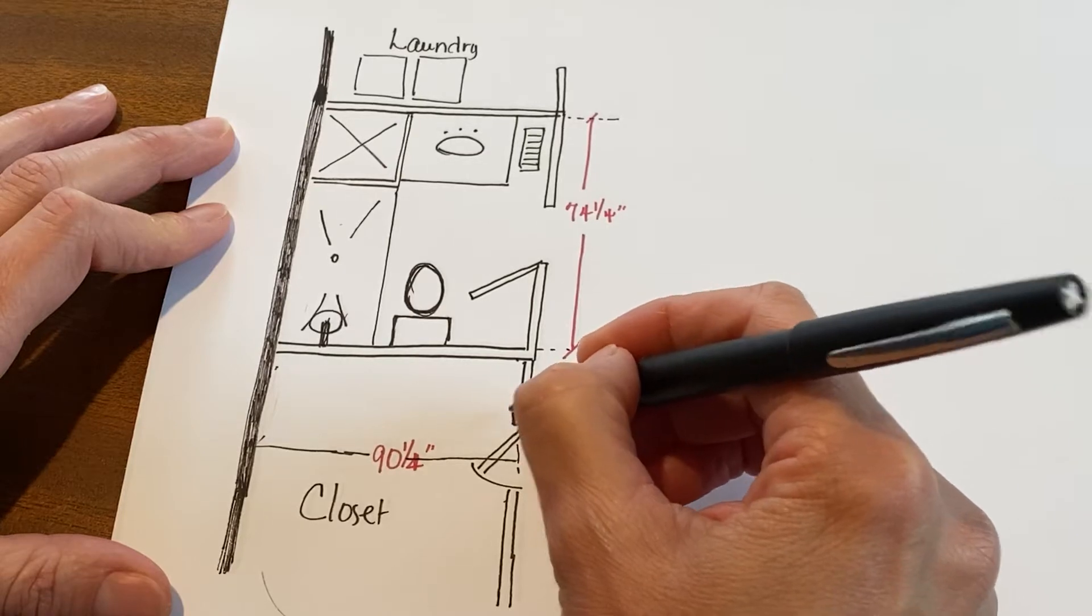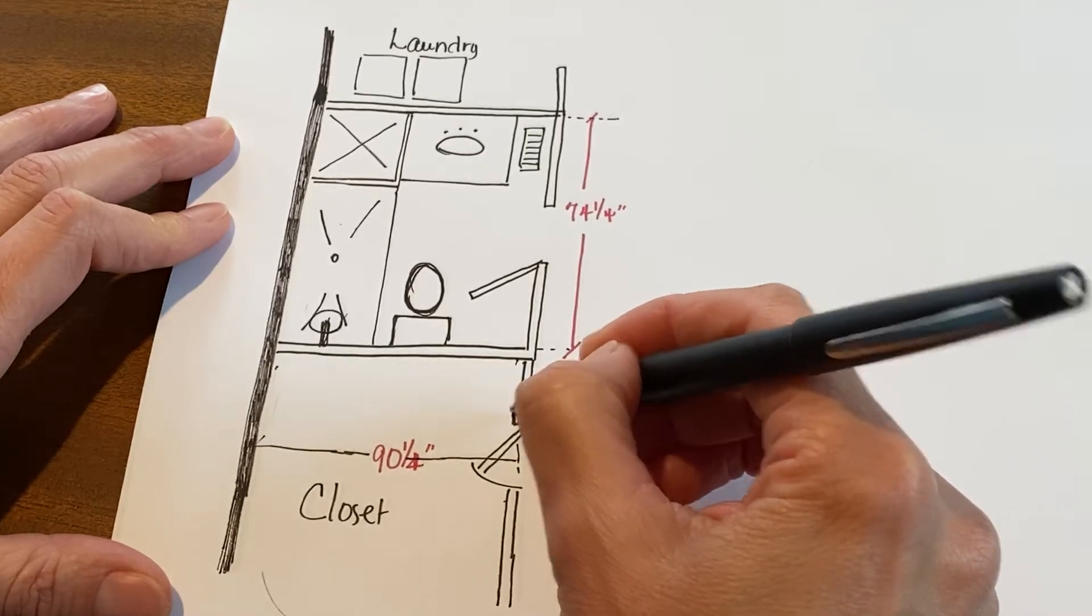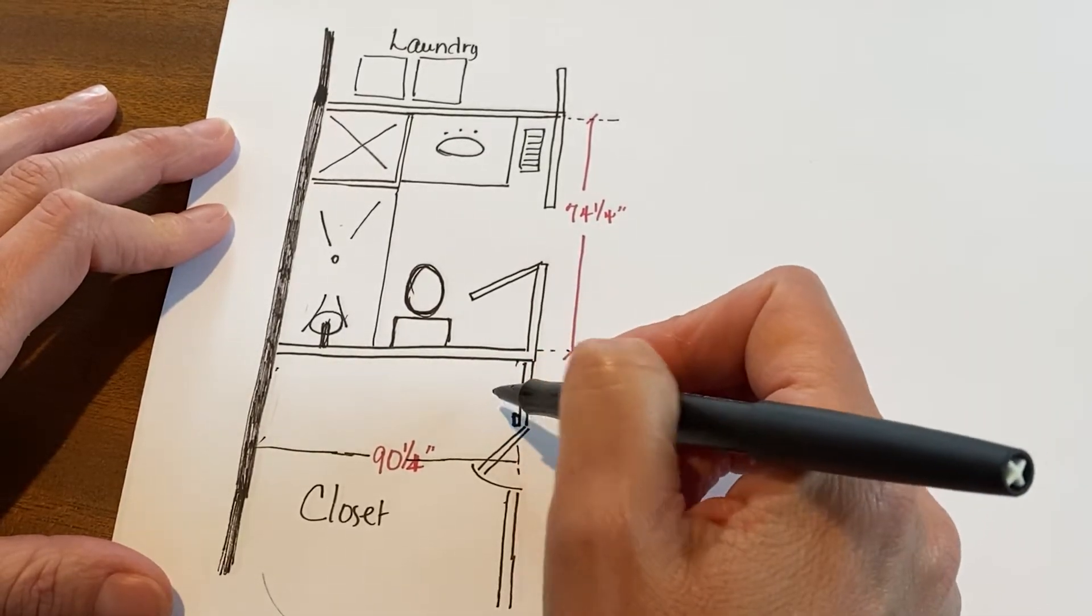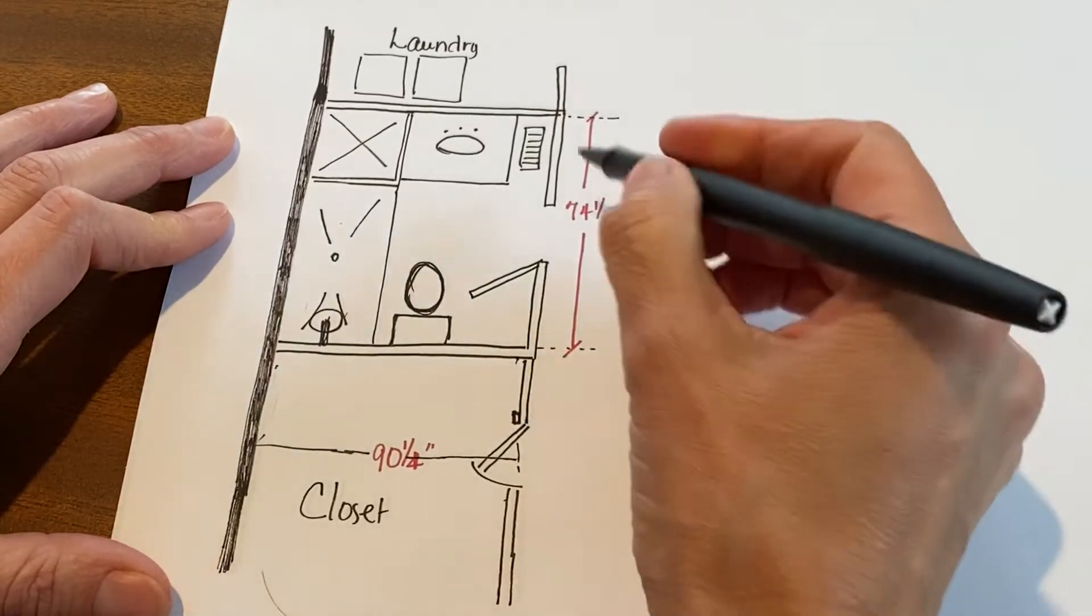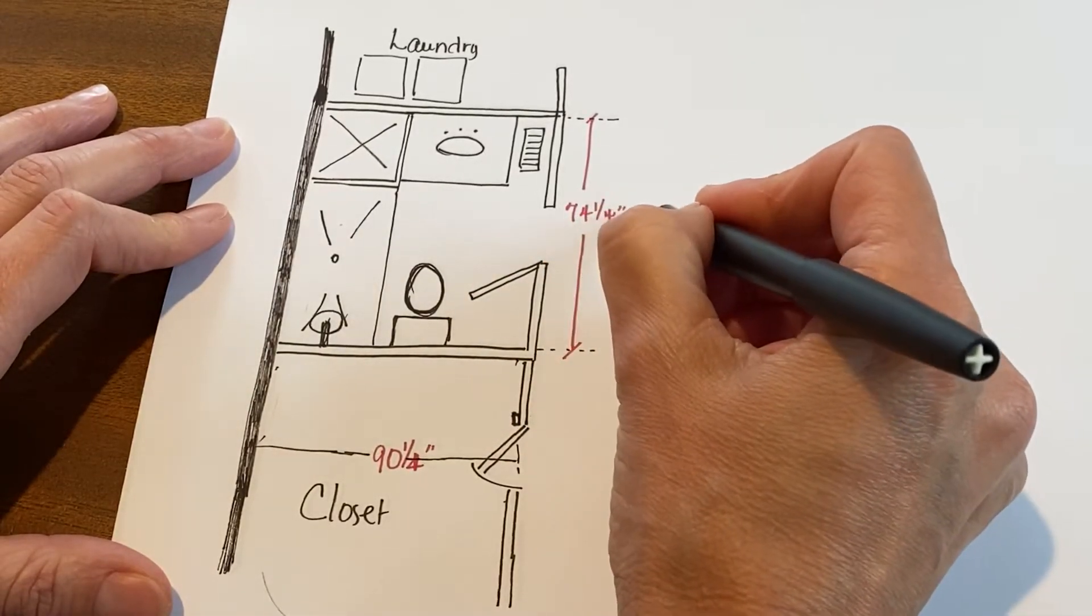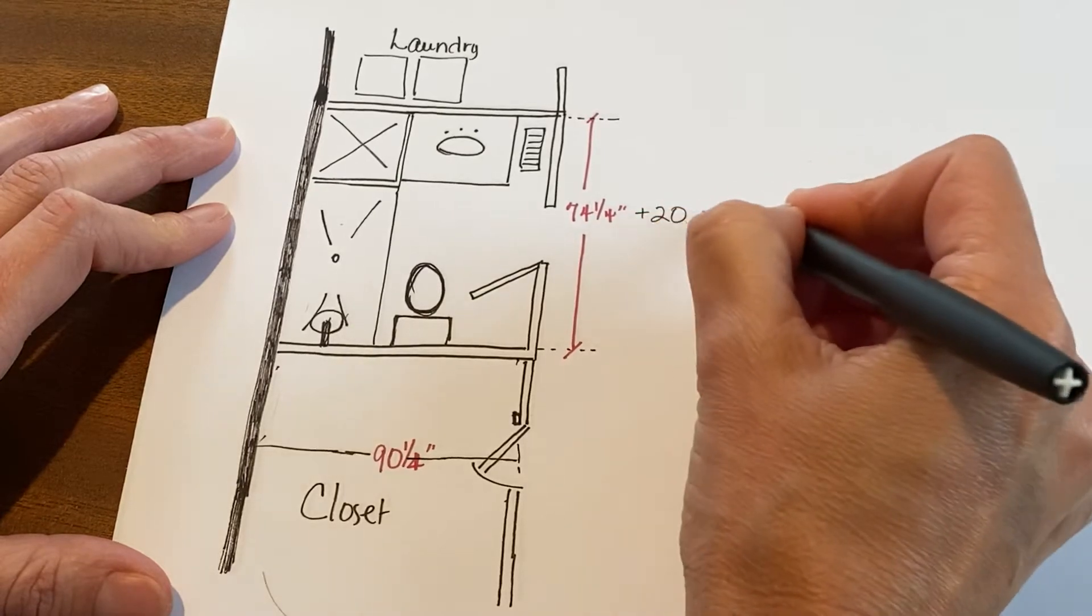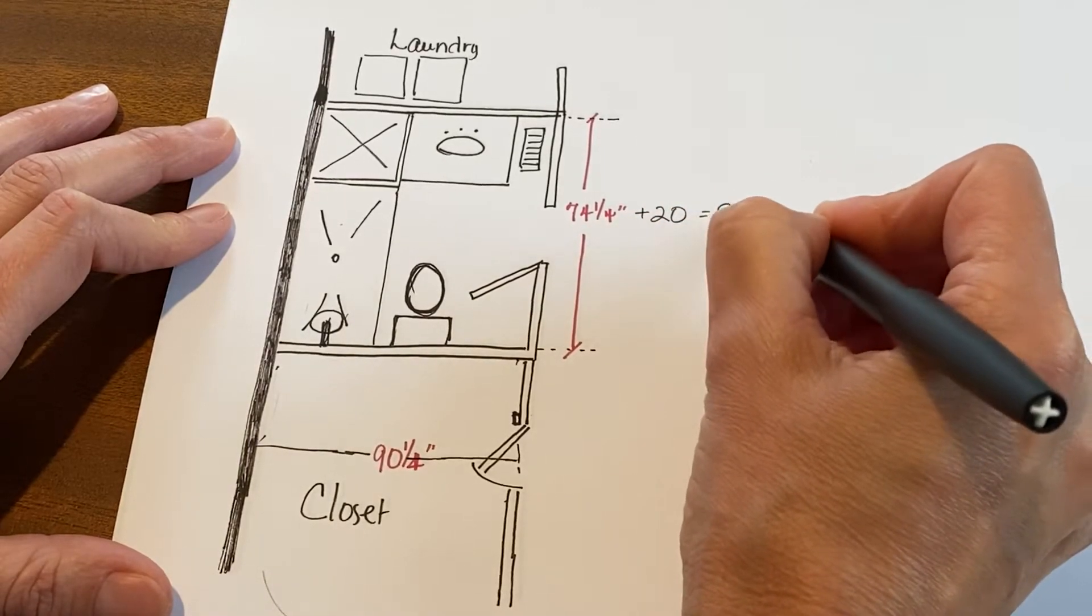So I measured from this wall to the casing around the door, and I had 20 inches right here. So I thought, 'If I gained 20 inches, what can I do?' I had 74.25 inches, so if I add 20 onto that, I'm gonna have 94.25 inches.